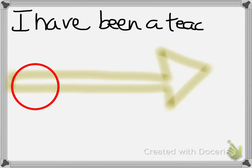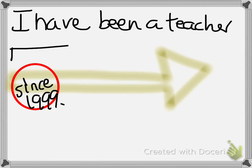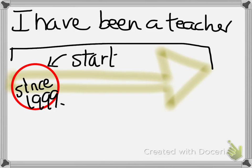If I'm talking about the start point of an action, when an action began, or when a state began to be true, then I use since, because since talks about the starting point of the situation.